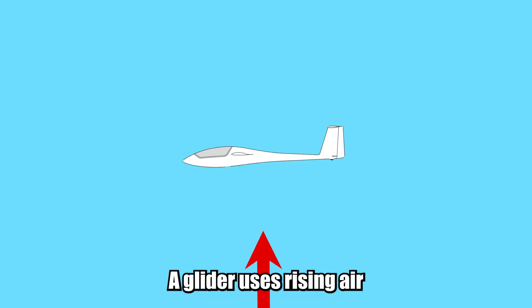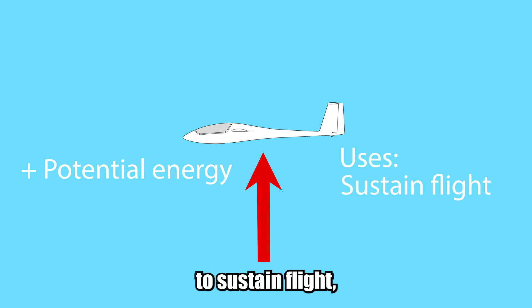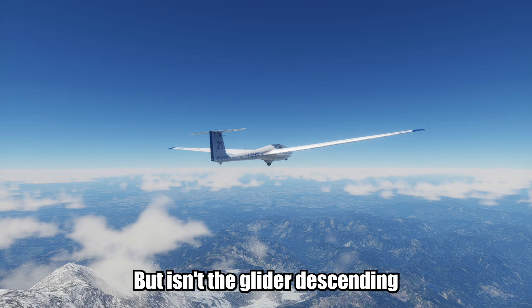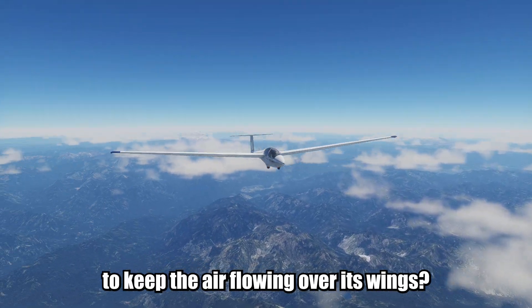A glider uses rising air to gain potential energy that it can use to sustain flight, reach higher speeds, and gain altitude. But isn't the glider descending through the air to keep the air flowing over its wings? The answer is yes.